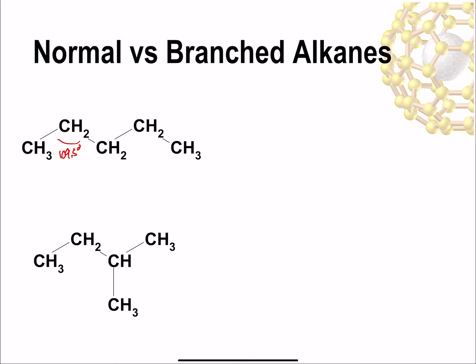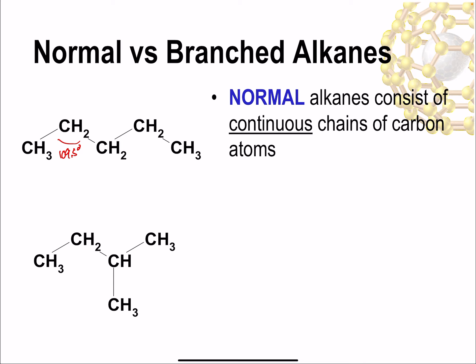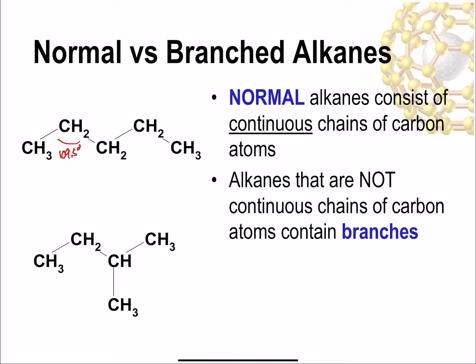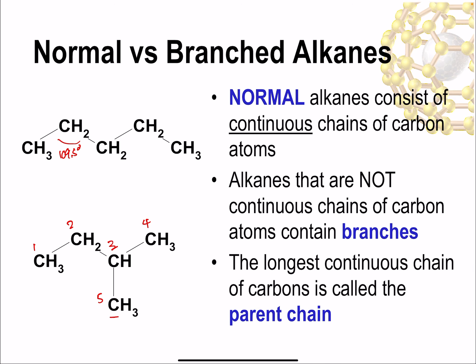Normal versus branched alkanes is a really fundamental idea. A normal alkane is one where there's just a continuous chain of carbon atoms. The first molecule has five carbons bonded together in a row — that's a continuous chain, so that's a normal alkane. Sometimes you don't have carbons just in a row. In the second molecule, there are four carbon atoms in a row and then a fifth carbon atom branching off the chain — that's called a branched alkane. The four in a row would be referred to as the parent chain, and the parent chain is the longest continuous chain of carbon atoms in the molecule.